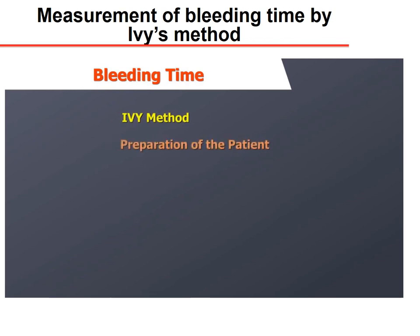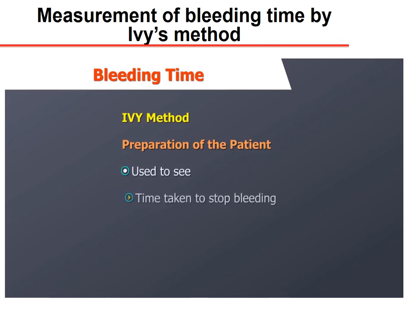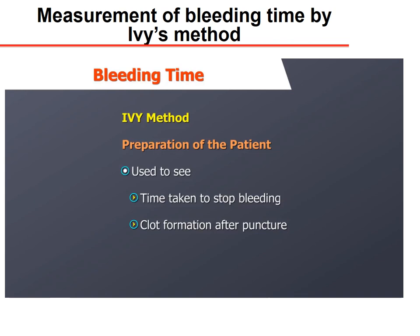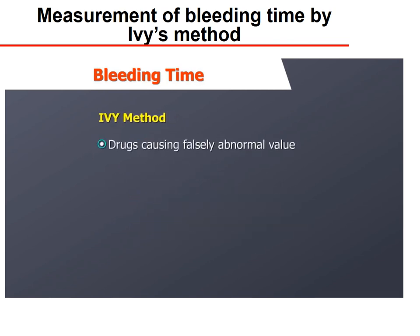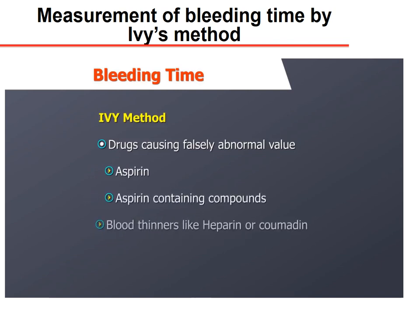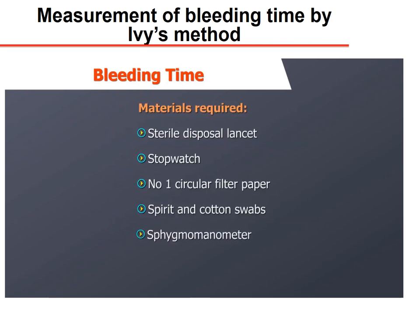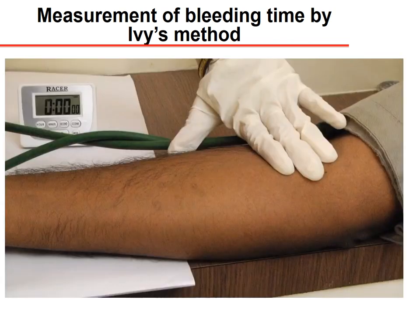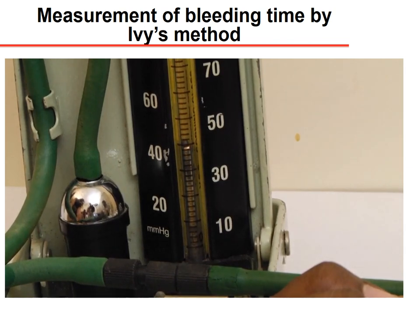The Ivy method tests how long it takes for a patient to stop bleeding and a clot to form after a puncture is made in the forearm. Inform the patient about the procedure and possible discomfort from the incision and sphygmomanometer cuff. It is important to ask whether the patient has taken aspirin, aspirin-containing compounds, or blood thinners such as heparin or coumadin recently, as these drugs will cause a falsely abnormal bleeding time. Materials are similar to Duke's method, with the addition of a blood pressure apparatus.